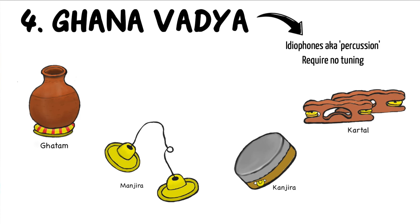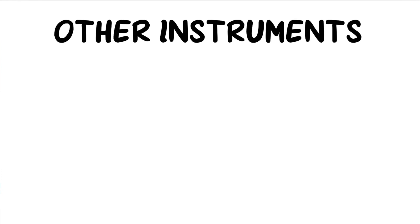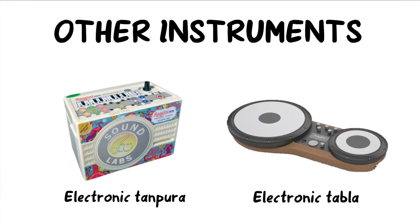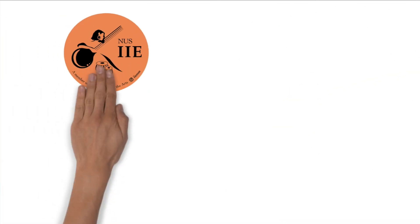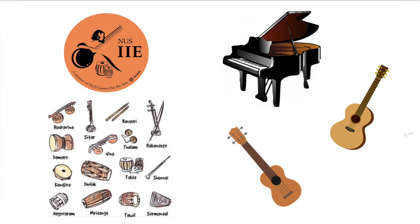While all Indian classical instruments fall under these four categories, in today's context we may see Indian concerts using instruments that fall outside these categories. For instance, we could have electronic instruments such as the electronic tanpura and the electronic tabla. Here at IIE, we foster a culture of experimentation and innovation by integrating instruments such as the piano, guitar, and ukulele along with Indian classical instruments. By doing so, we hope to provide a platform for instrumentalists of different genres to explore the numerous facets of Indian classical music.